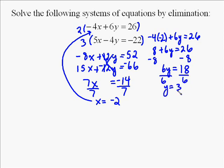So our solution to this problem is x equals negative 2, y equals 3, and we write it as an ordered pair.